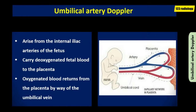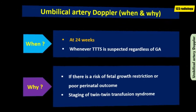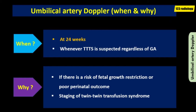In the fetus, the umbilical arteries arise from the internal iliac arteries and are responsible for carrying deoxygenated fetal blood to the placenta. Oxygenated blood returns from the placenta to the right atrium by way of the umbilical vein. In clinical practice, Doppler ultrasound of the umbilical artery is not performed until 24 weeks of gestation. However, in twin-twin transfusion syndrome, it is performed whenever the diagnosis is suspected, regardless of gestational age.